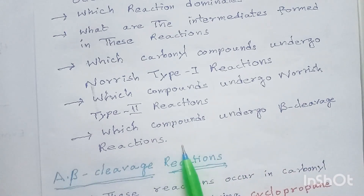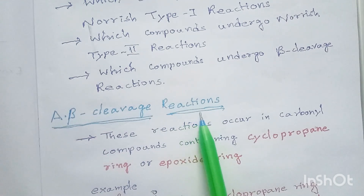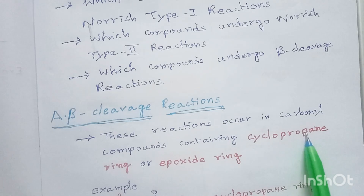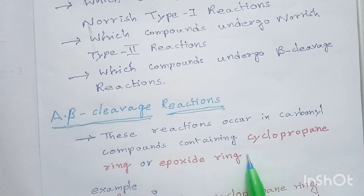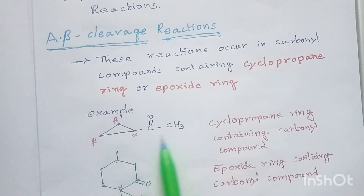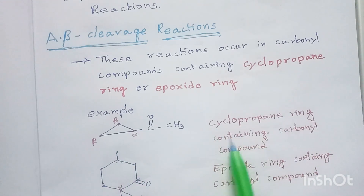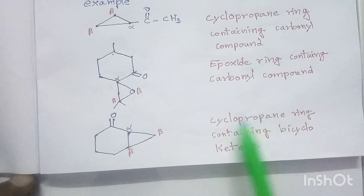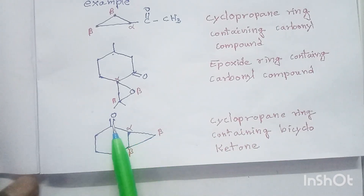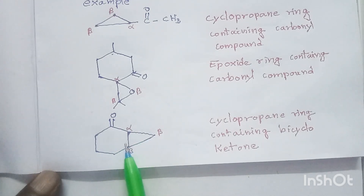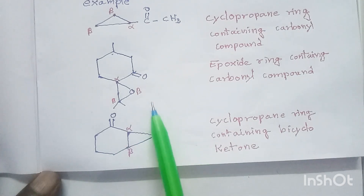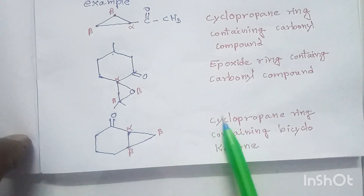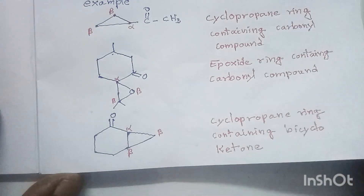First, let us see beta cleavage reactions. These reactions occur in carbonyl compounds containing a cyclopropane ring or epoxide ring. Examples include acetyl cyclopropane, which is a cyclopropane-containing carbonyl compound, an epoxide-containing carbonyl compound, and a bicyclo carbonyl compound which has a cyclopropane ring. This kind of carbonyl compounds undergo beta cleavage reactions.